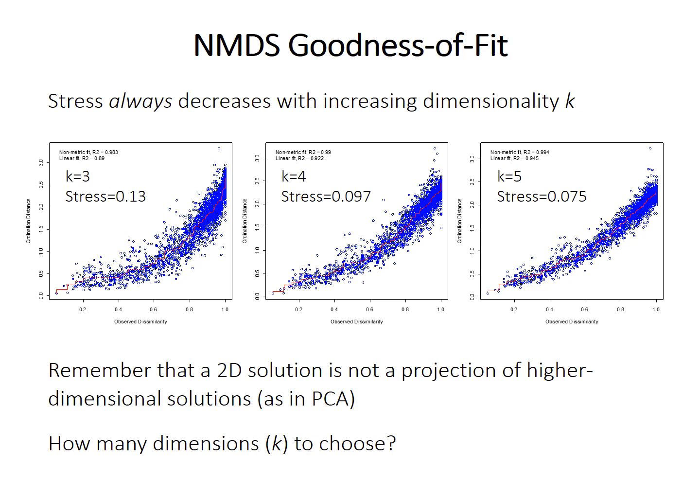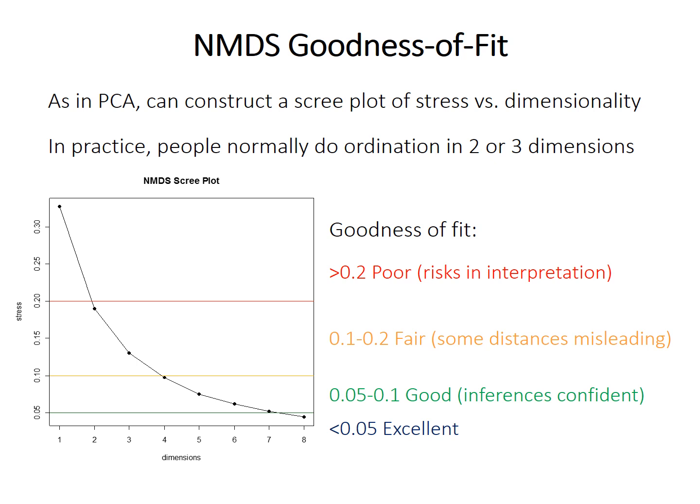The two-dimensional solution is not a projection of a higher-dimensional arrangement — you can't just do it in five dimensions and look at axes one and two, because the axes don't actually mean anything, and it's not the same as doing it in two dimensions. So how many dimensions do you choose? It's possible, though a little difficult in R, to create a scree plot of stress versus number of dimensions. But in practice, people mostly just do ordination in two or three dimensions, making sure the fit is reasonable in the chosen dimensionality.